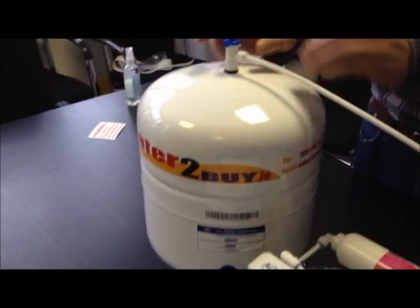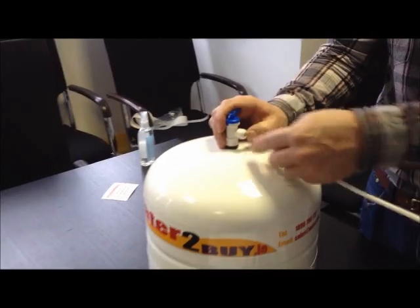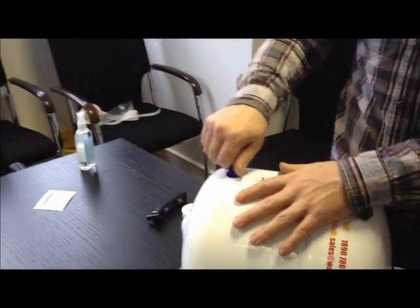Next, check the pressure in the pressure vessel. You can use any standard car or bicycle pressure gauge. Your pressure should be 8 to 12 psi.